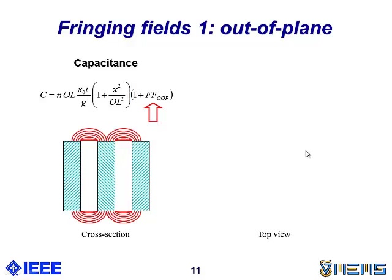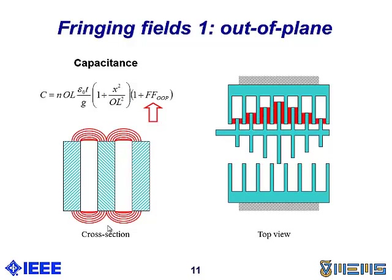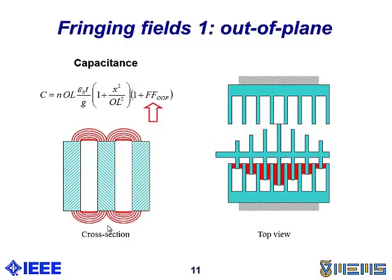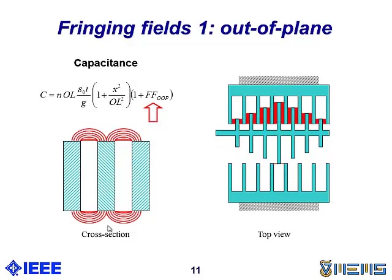This device may be affected by fringing field, and there are two types of fringing fields. The first is an out-of-plane fringing field. What we see here is a cross-section. This is one rotor finger in between two stator fingers, and we have fringing fields on the top and on the bottom. But since the gap is uniform, these fringing fields are just a constant factor. On the top view, what we see is that overlap area may be a quadratic function of motion, but the fringing fields themselves are just a constant factor.